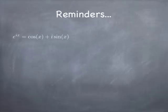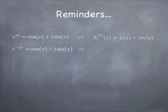I want to remind you of a few things. You remember the Euler relation between e to the ix and cosine and sine, and e to the minus ix and cosine and sine. There's a very similar relationship between the spherical Bessel functions of the first and second kind — the j's and the n's — and the Hankel functions of the first and second kind, the h1 and h2 functions. They have a very similar relationship.